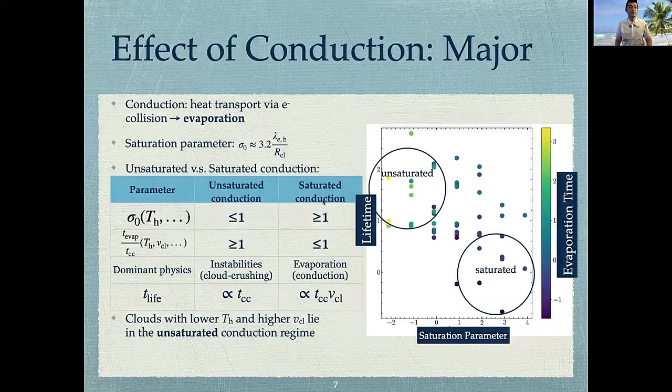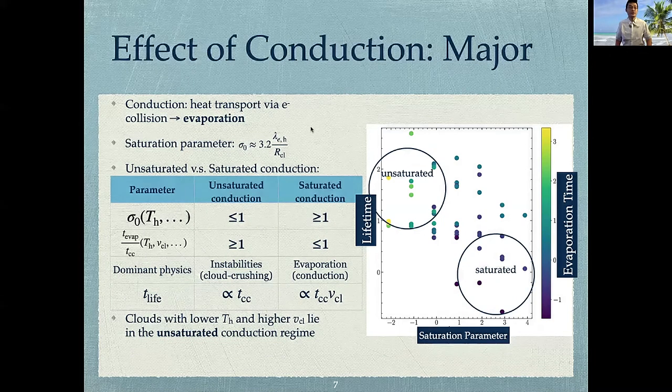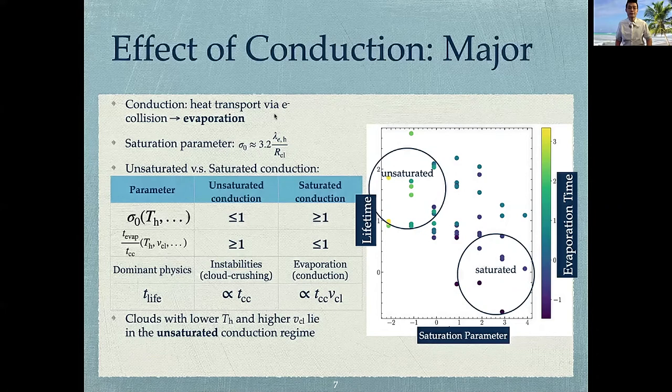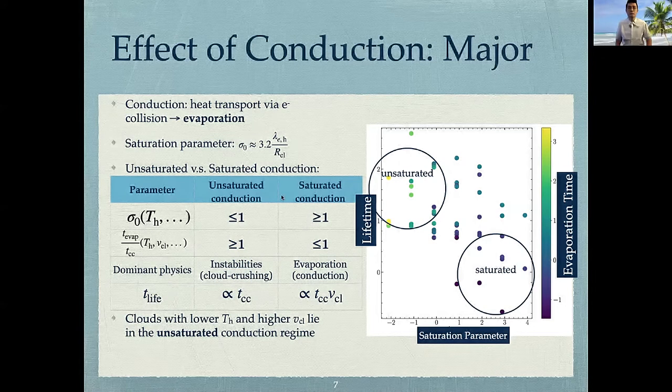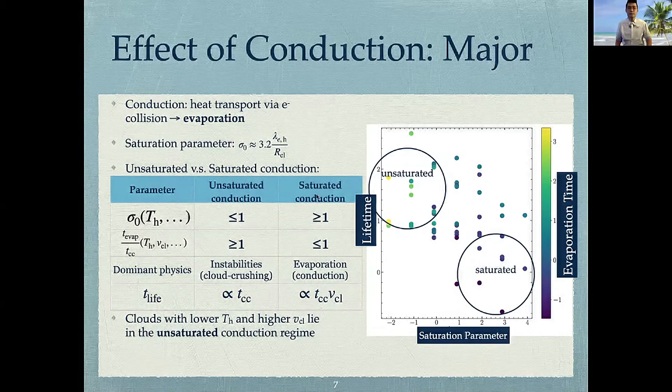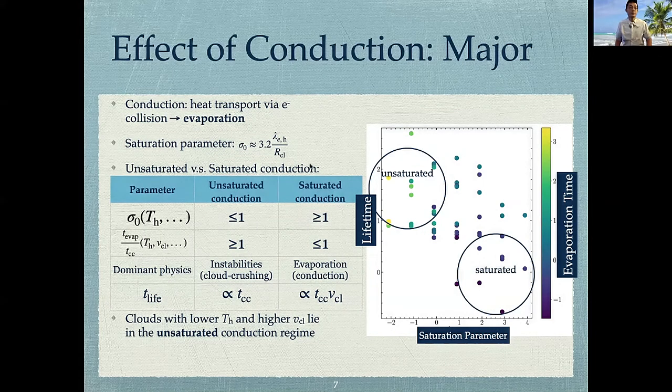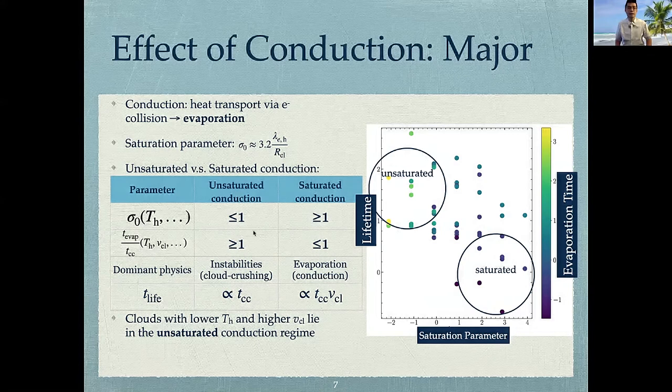So we found that the effect of thermal conduction should play a major role in this, which is the heat transport process via electron collisions. And this conduction process tends to evaporate the cloud. So based on whether the maximum heat flux is reached, we separate conduction into two different regimes, unsaturated versus saturated. And we found that two important parameters, which are the saturation parameter, sigma_0, and the cloud evaporation time, t_ev, are very important here. And they take very different values in these two regimes.